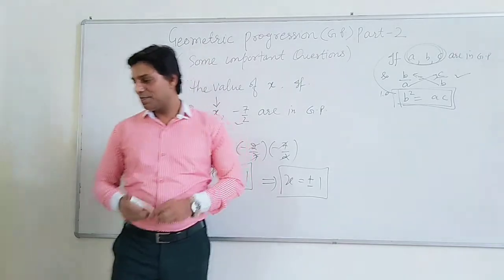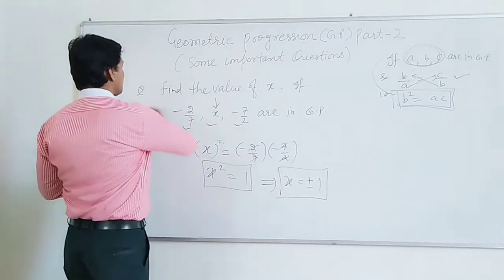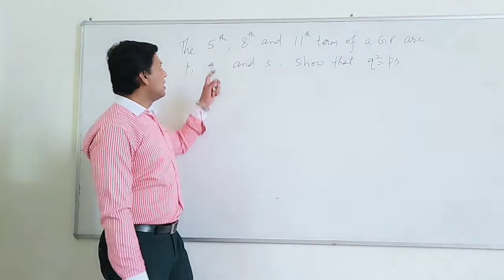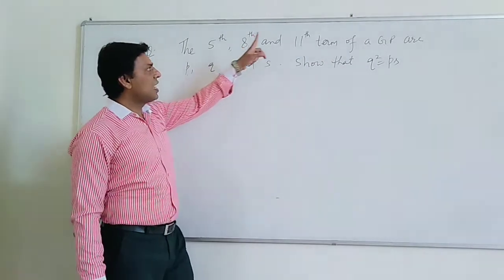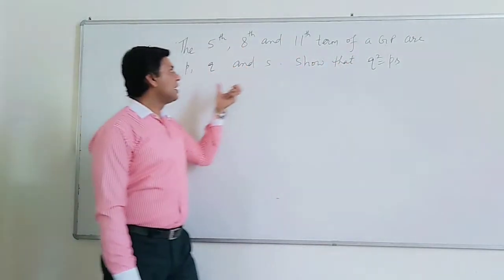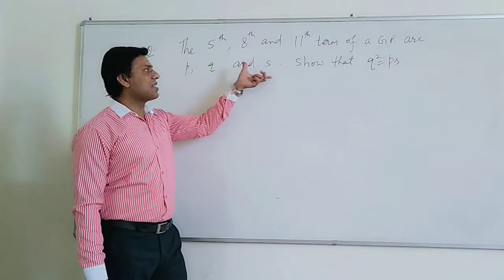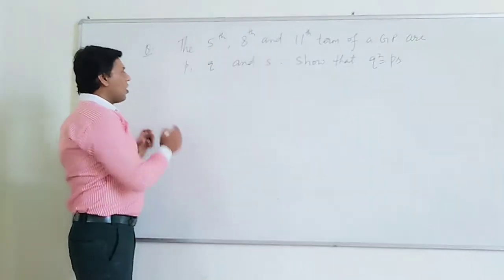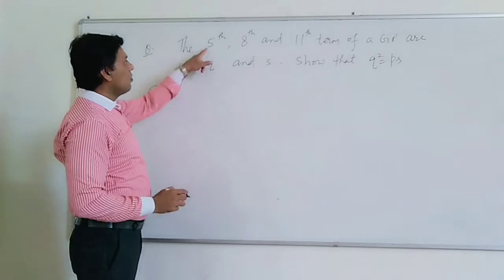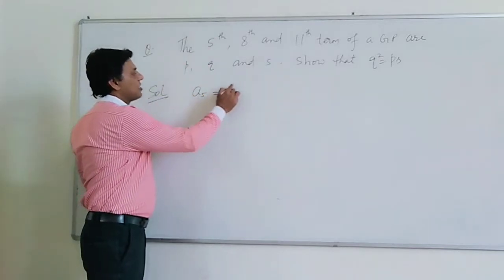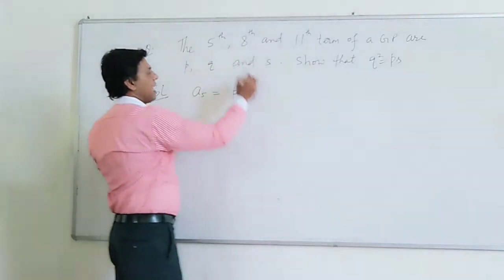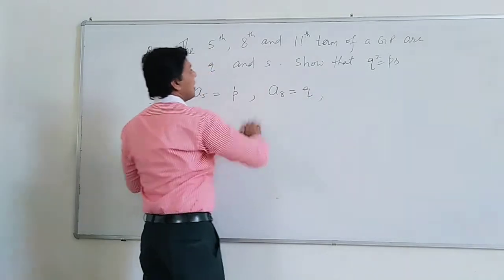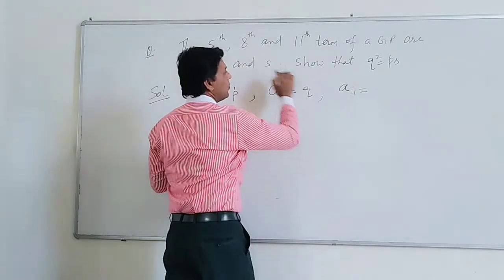Four more questions — keep watching. See this question: it is given that the 5th, 8th, and 11th terms of a GP are P, Q, and S respectively. We have to establish a relation between P, Q, and S. First of all, starting — the 5th term, that is A5, is equal to P. Similarly, the 8th term A8 is equal to Q, and A11 is equal to S.